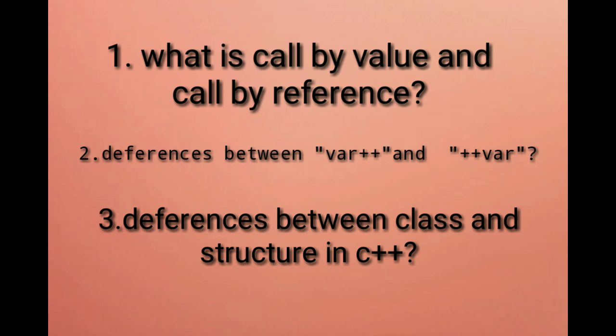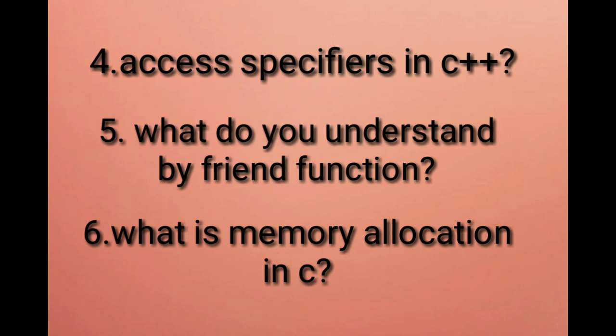Access specifier in C++. What do you understand by friend function?